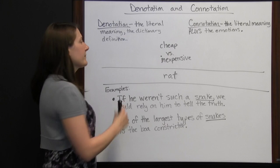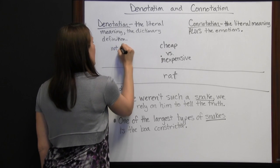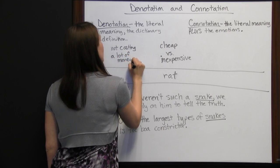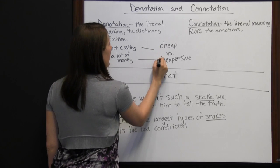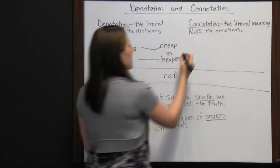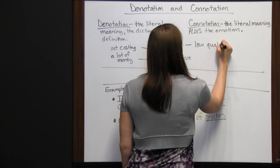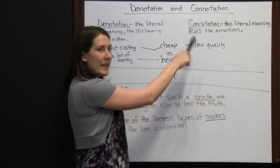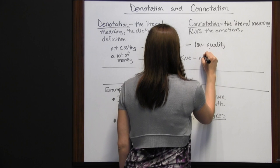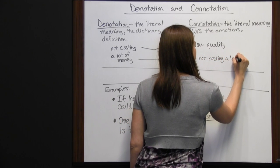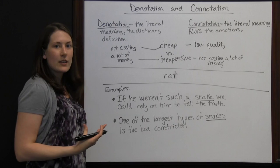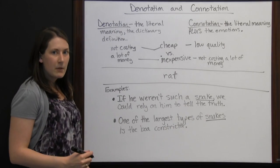Consider 'cheap' versus 'inexpensive.' Both mean 'not costing a lot of money' — that's the dictionary definition. But when you hear 'cheap,' you sometimes think low quality: if it's cheap, it doesn't cost much because it has low quality. 'Inexpensive,' on the other hand, is a more neutral word — you just think 'not costing a lot.' Inexpensive doesn't carry the connotation of lower quality the way 'cheap' might.